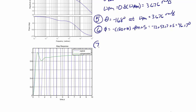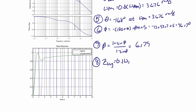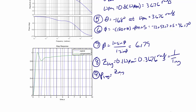Step 7 is to use beta to find phi. Beta equals 1 plus sine(phi) over 1 minus sine(phi), giving beta equal to 6.179. Step 8 is to use the new phase margin frequency to find z-lag. Z-lag equals 0.1 times omega-pm, which is 0.3676 radians per second, also equal to 1 over t-lag. Step 9: p-lag equals z-lag divided by beta, which equals 0.059 radians per second.